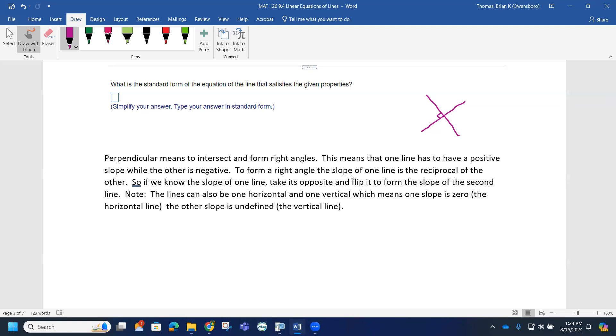To form a right angle, when we talk about the slopes, to form a right angle, the slope of one line has to be the reciprocal of the other. So if we talk about the relationship of the slopes, if I know the slope of one of the lines, the slope of the other line has to be the reciprocal.